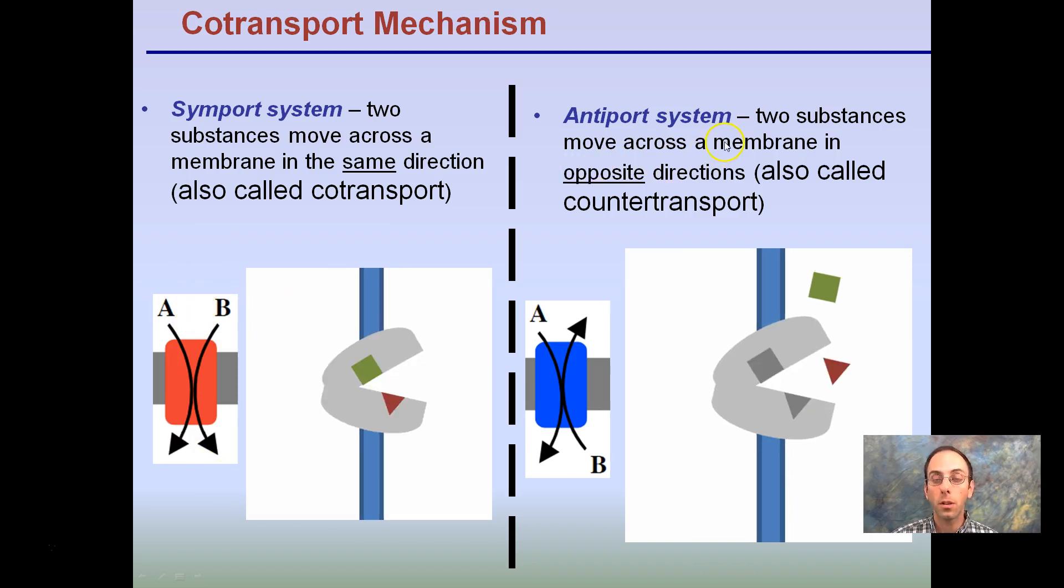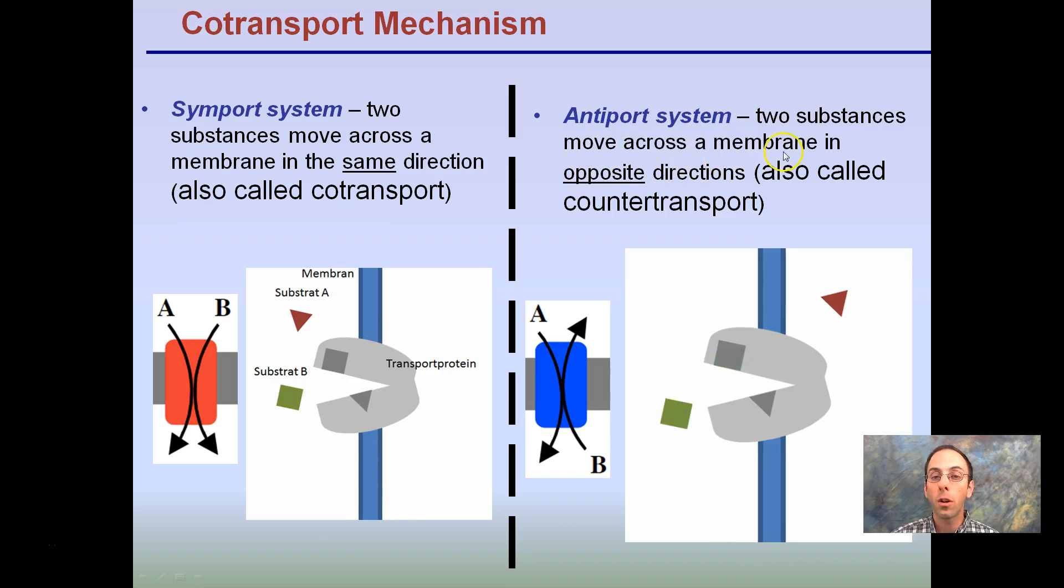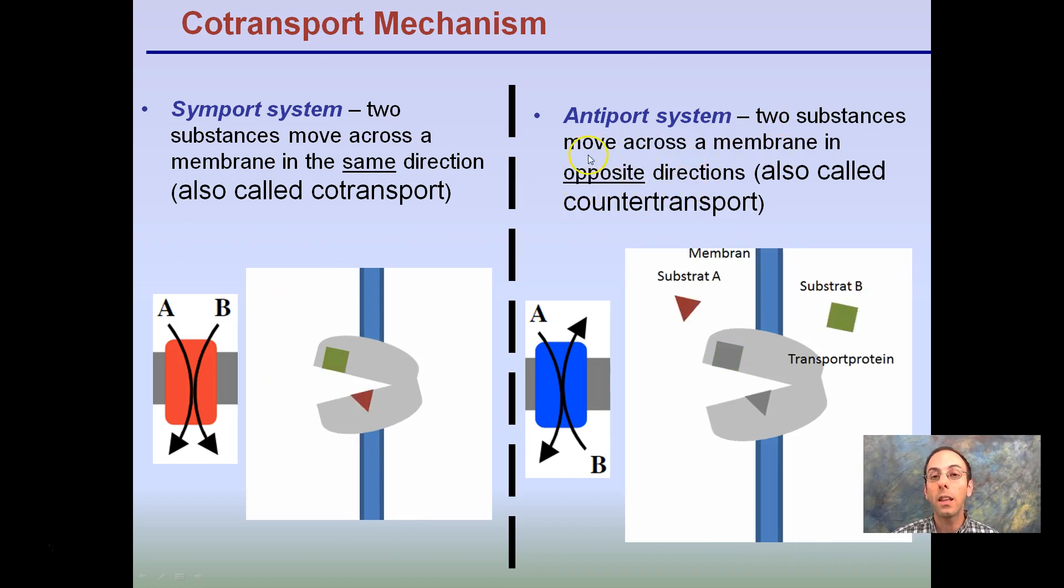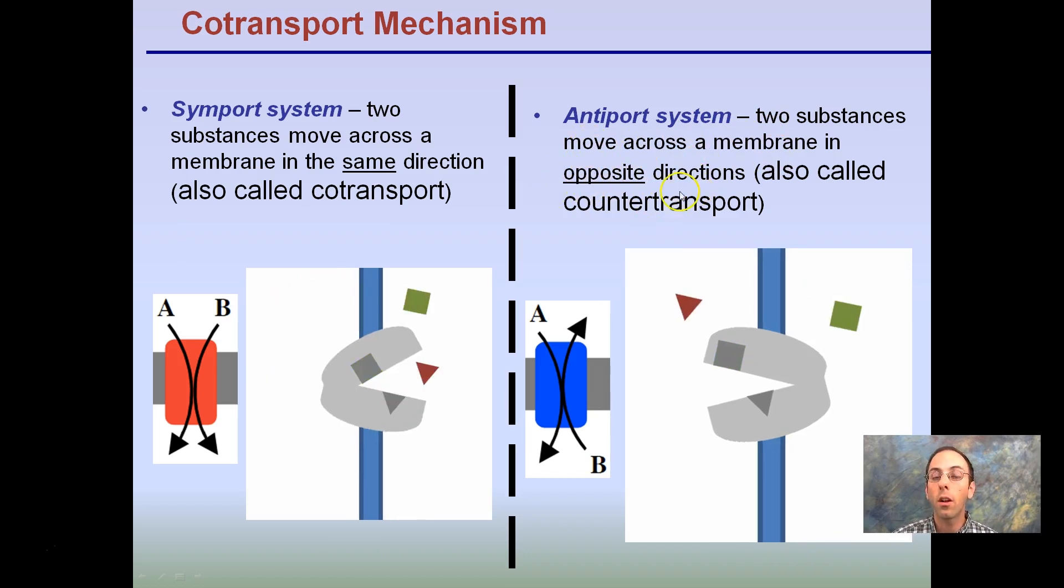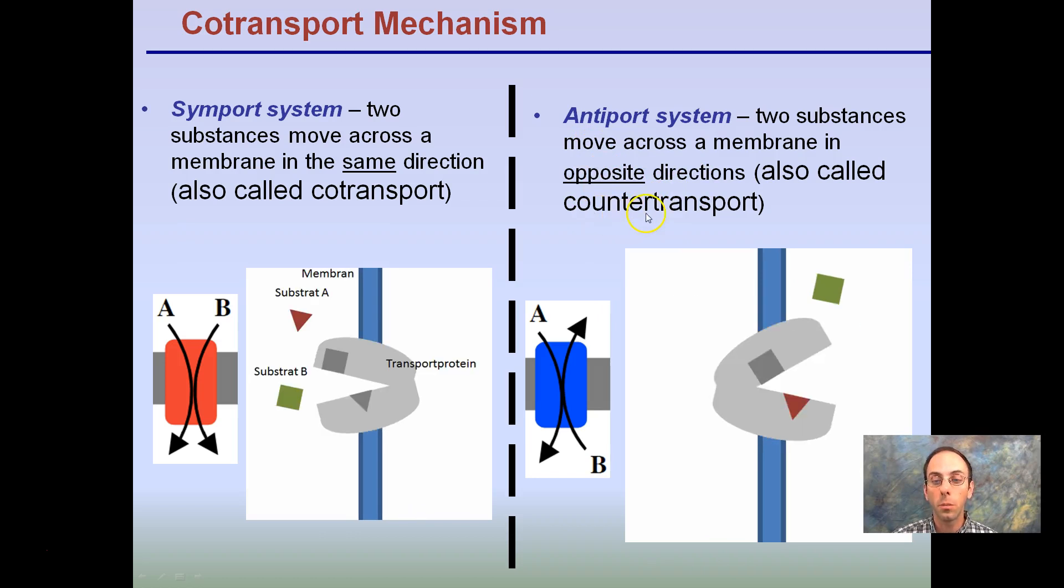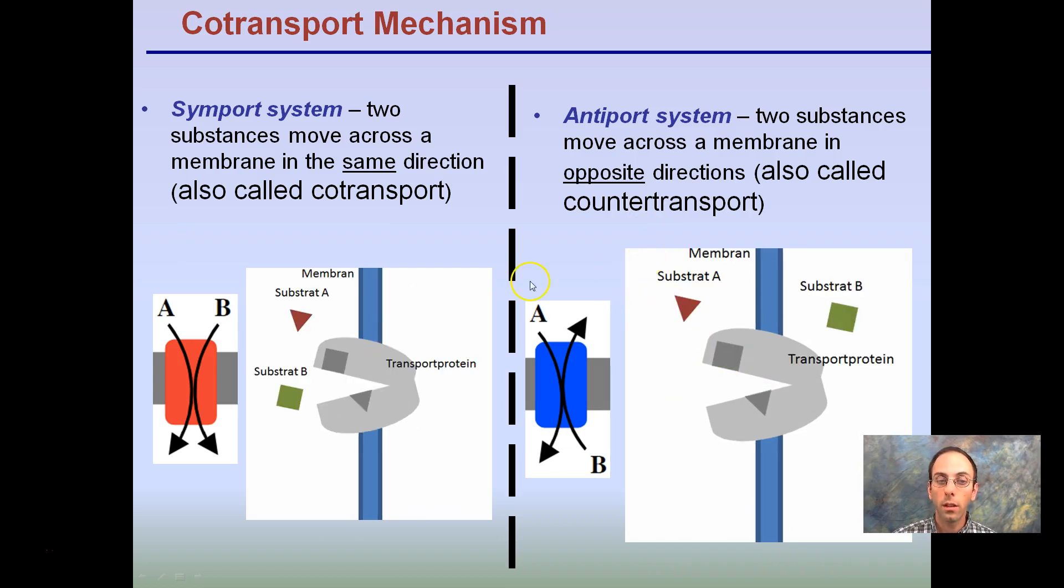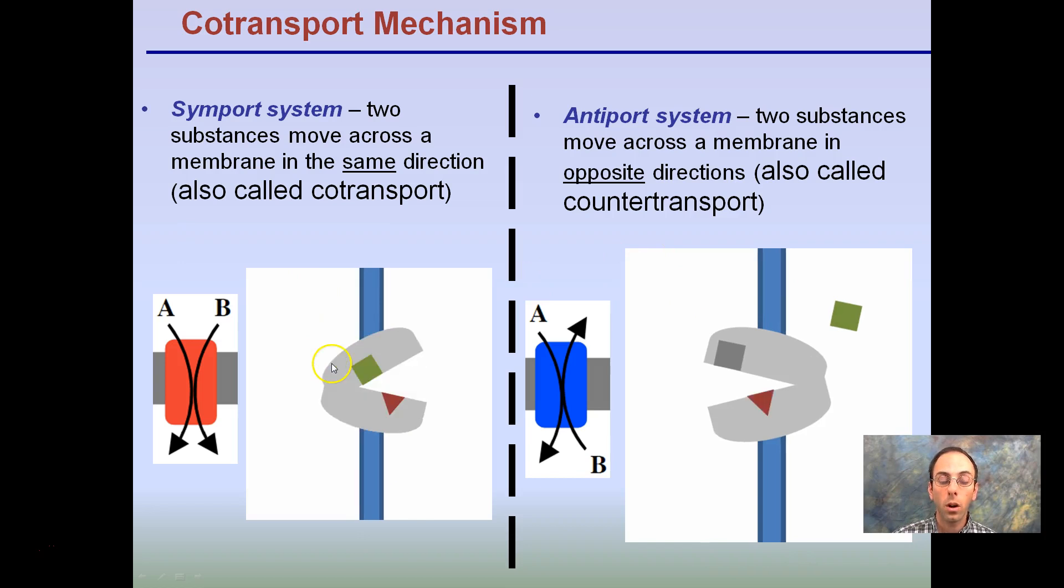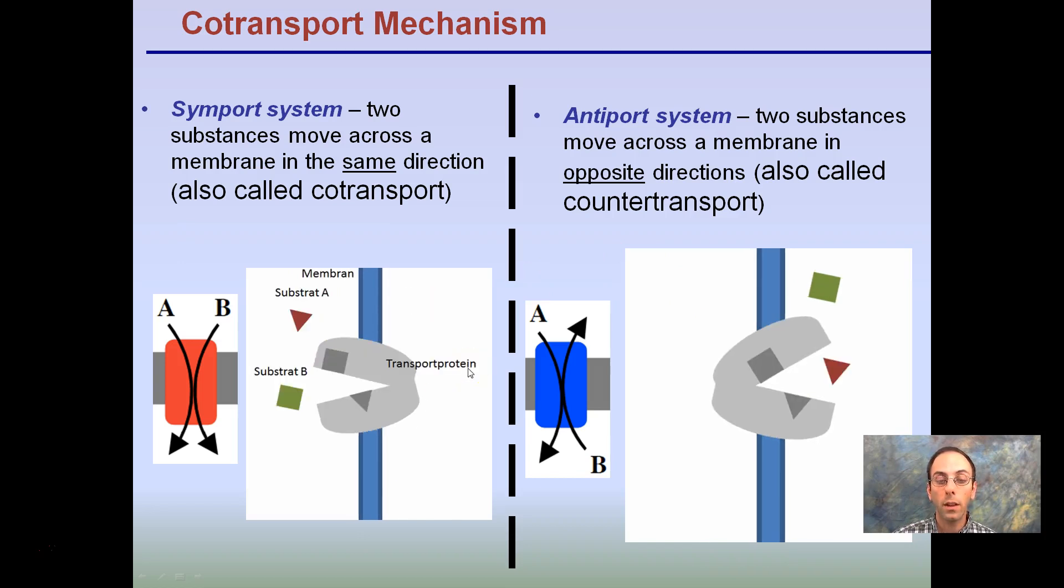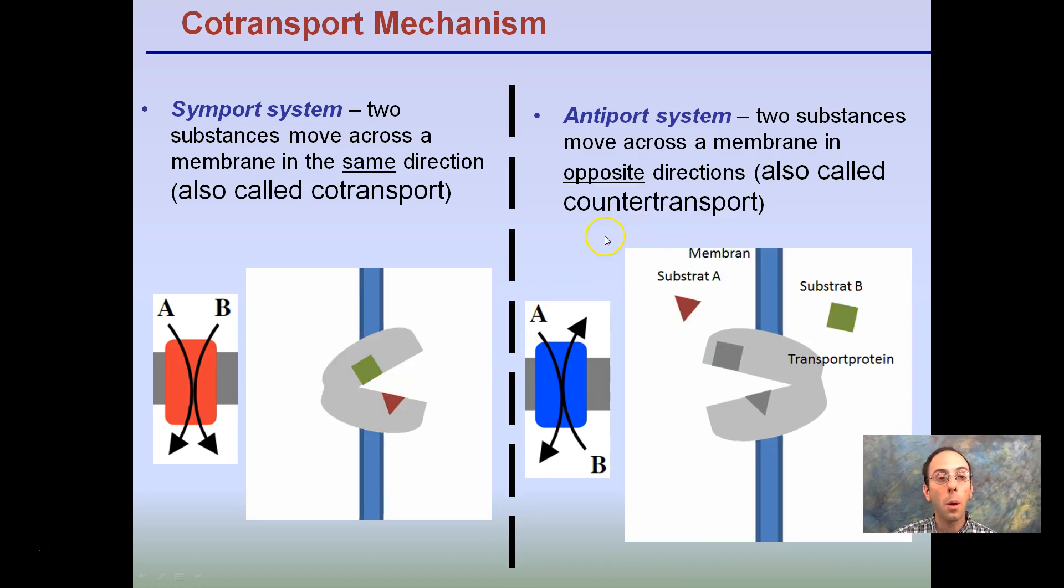Here, our antiport system, just as the name implies, two substances move across the membrane in the opposite direction, anti directions. And this is also called a countertransport system. So we see here the triangle is moving this way, and the green square is moving to the other side. In this case here, we see them both binding to our protein, and they're both being released on the other side. Hopefully this helps explain some transmembrane proteins.